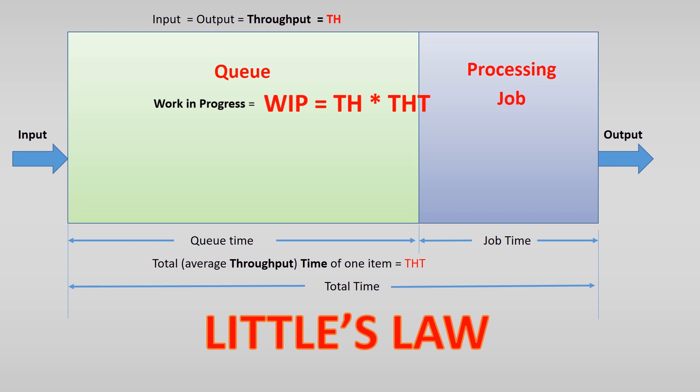Well, this is Little's Law. WIP equals TH multiplied by THT. By the way, Little calls this L equals lambda multiplied by W.